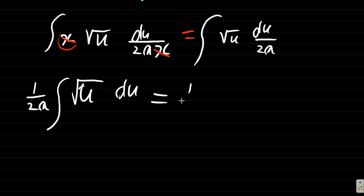Now this can be written as 1 over 2a integral of u raised to the power of the square root. It's the number to the power of a half, so it's u to the half du.